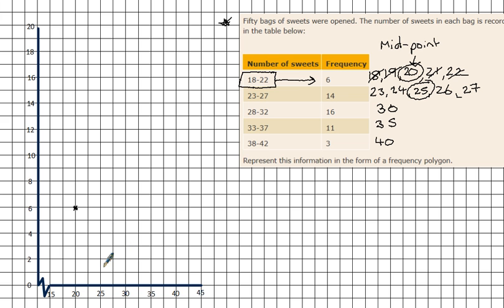Next one, midpoint is 30, frequency 16. Frequency 11 and midpoint 35. Next one, midpoint is 40, frequencies 3, so that's there.